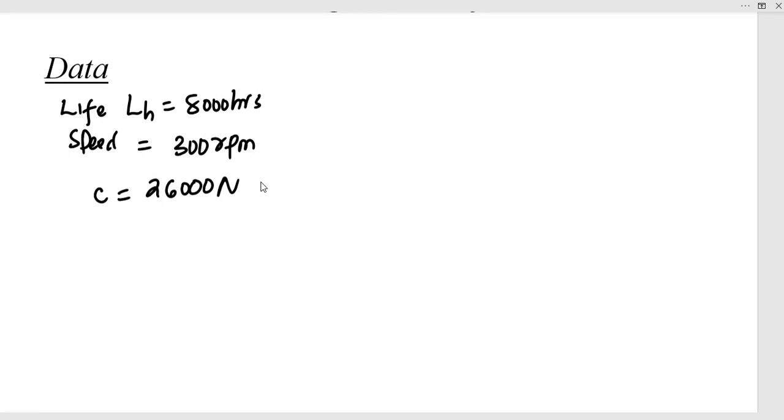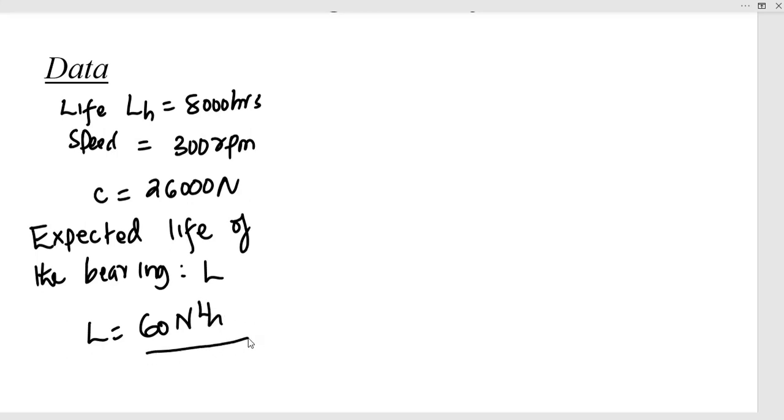Now, we need to look at the expected life of the bearing, and that is L. So L is defined as 60 times N times L_h divided by 10 power 6. L_h is the number of hours the bearing is going to run before the first evidence of fatigue or failure, and it is given as 8,000 hours.